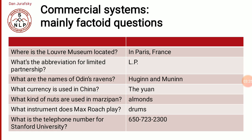Commercial systems are mainly factoid-based. For example: Where is the Louvre Museum located? — Paris, France. What is the abbreviation of limited partnership? — LP. What are the names of Odin's ravens? — Huginn and Muninn. What currency is used in China? — The Yuan. What kind of nuts are used in marzipan? — Almonds. What instrument does Max Roach play? — Drum. These are all factoid answers where you get a direct reply.